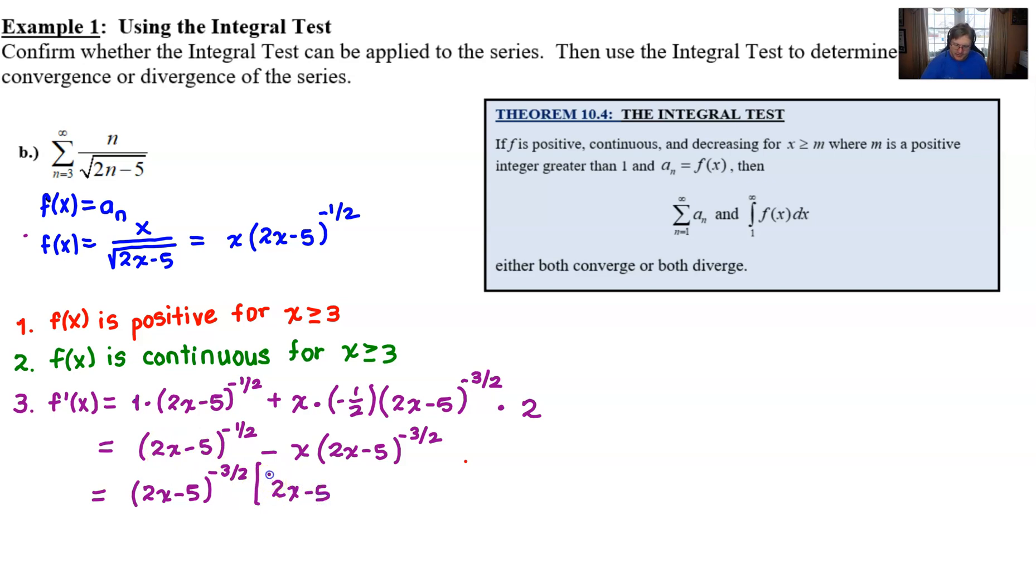That will leave us with a 2x minus 5 to the first power. Now, if you want to think about that, why is that to the first? I'll put parentheses in a one here, just to help. If I multiply this back through, when I add the exponents, negative three halves plus one, it is negative one half. What do you say we get rid of those parentheses, though? And then I'll subtract and just x is left here. And so now I can really clean this up. I end up with x minus 5 on top and what essentially could be written as the square root of 2x minus 5 cubed on the bottom. And this should make things fairly easy for us to determine whether or not we are going to be a decreasing function.